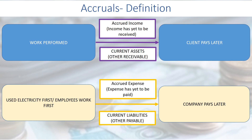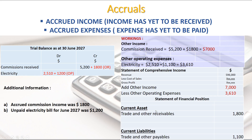This is called accrued expense. When we have accrued expense, it is considered under liabilities — to be more exact, it falls under current liabilities, or other payable.